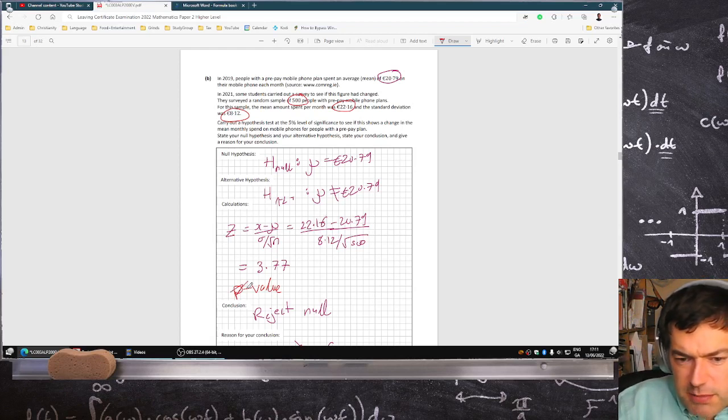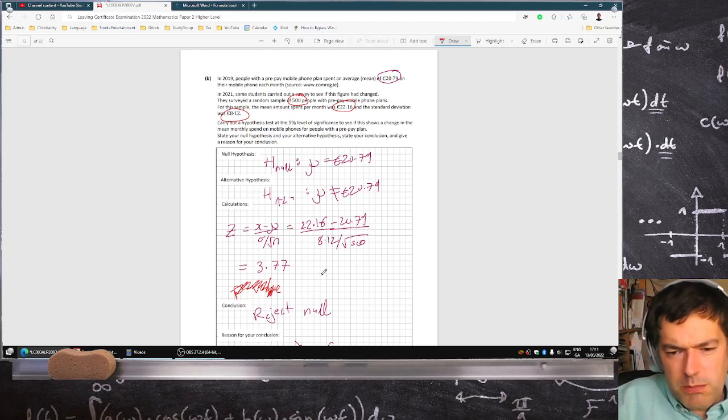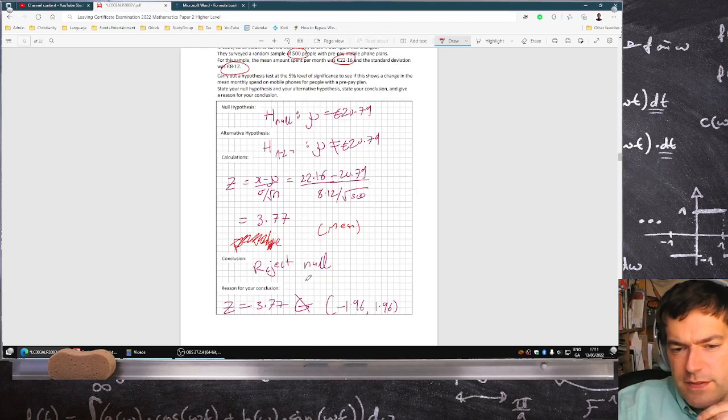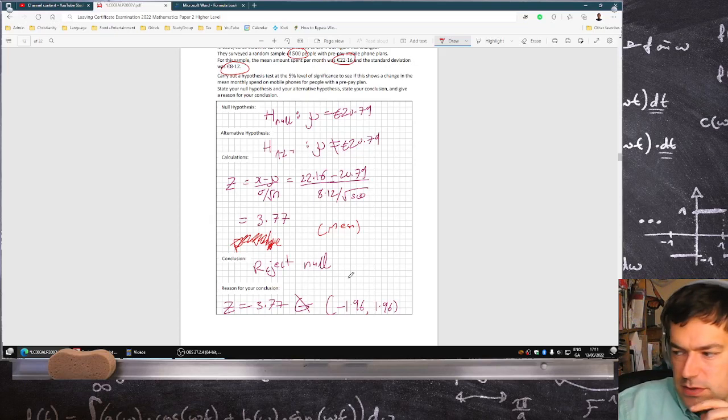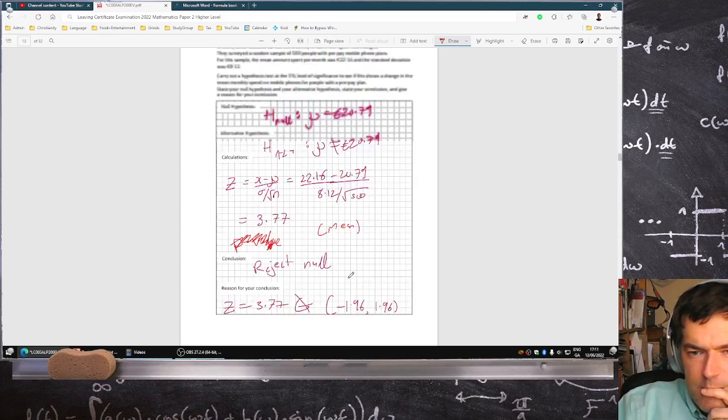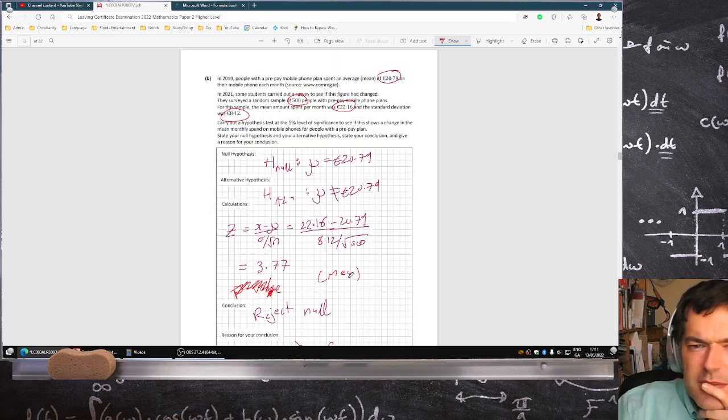Yeah, so you actually can't get the p-value here. Very mean of them. So you have to just know that 1.96 is kind of the cutoff value. The critical value is 1.96. I'm not happy with this question.